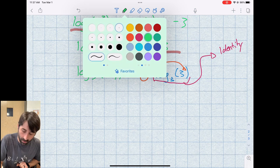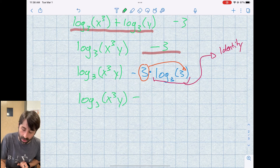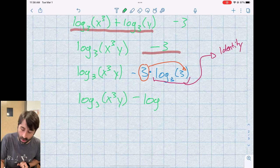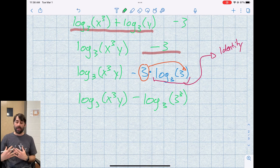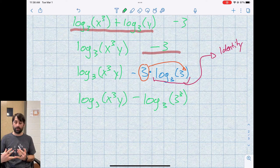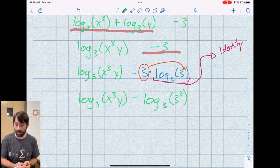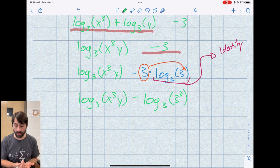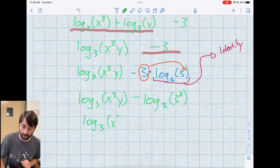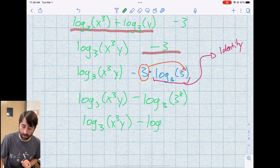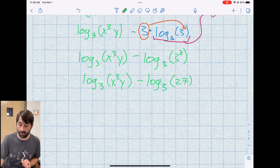So again, I'm going to rewrite my first term here, log base 3 of x cubed y minus, now this turns into log base 3 of 3 cubed. So now at this point, because I didn't have to think about my exponents really, now the exponents are just sitting there and I just have to evaluate. So 3 to the 3rd power is 27.